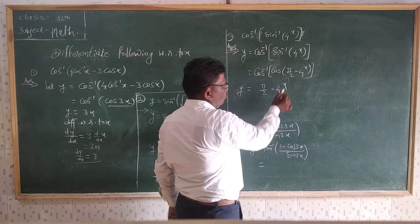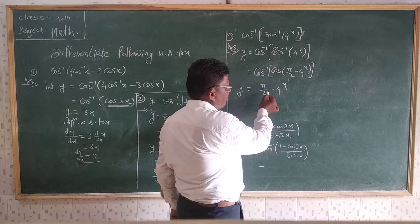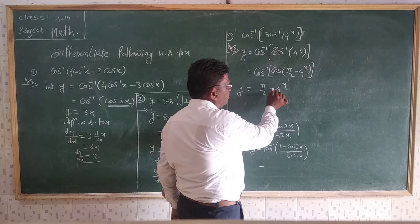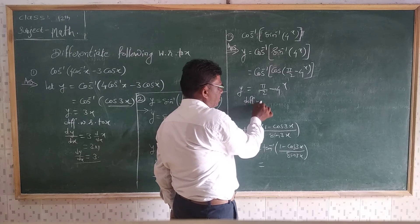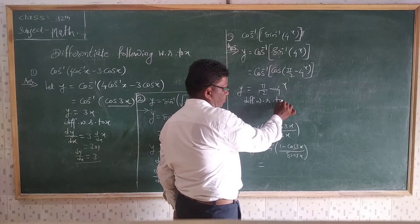Then cos inverse of cos getting cancelled. Remaining here π/2 minus 4^X. Then differentiate this after simplification with respect to X.